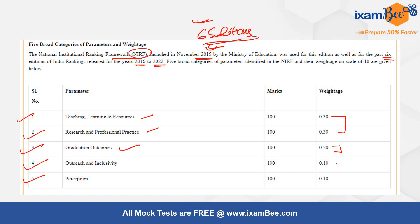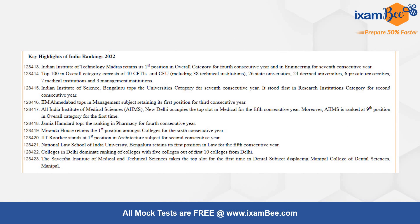Graduation Outcomes gets 20% weightage, and Outreach & Inclusivity and Perception get 10% each. You need to remember the five parameters well, as questions can be framed like 'which of these is NOT an NIRF parameter.' Remember that Teaching Learning & Resources and Research & Professional Practice have the highest weightage at 30% each.